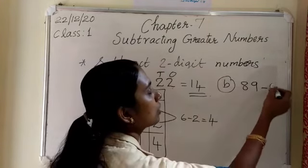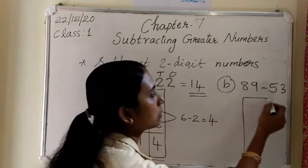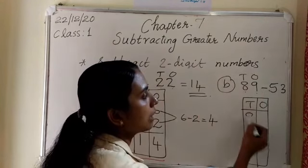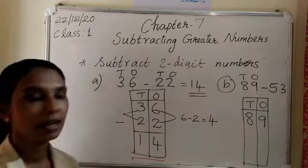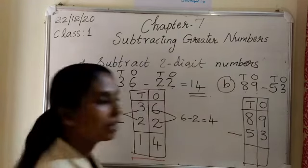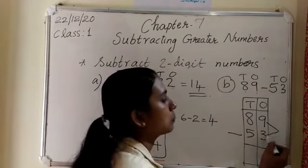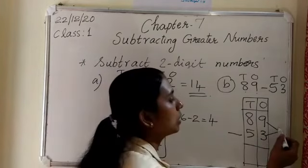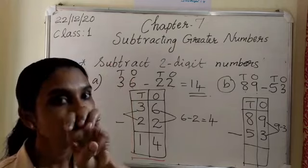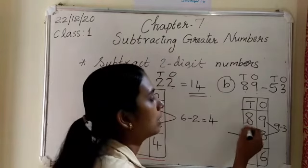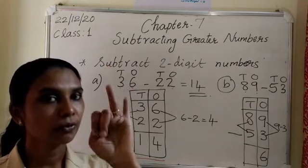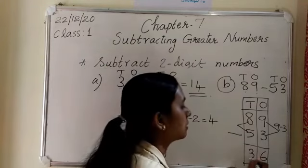89 minus 53. Draw the box. Write tens and ones. First number 89. Minus second number 53 — 5 tens and 3 ones. Write in the second line. Then subtract the ones place. 9 minus 3: 9 in your mind, 3 on finger — 8, 7, 6. And 8 minus 5 in the tens place: 8 in your mind, 5 on finger — 7, 6, 5, 4, 3. The answer is 36.